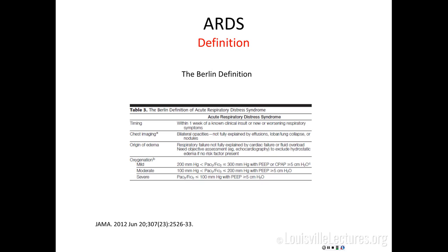This is the new definition. Timing has to be within one week. The chest X-ray must show bilateral opacities. The origin of the edema should not be from the heart. They don't talk about pulmonary artery catheter here because we don't place as many as we used to, but they talk about having some objective assessment — echocardiography, maybe brain natriuretic peptides. And there is grading of severity: mild ARDS is PO2/FiO2 between 200 and 300, moderate is between 100 and 200, and severe is less than 100. They also add PEEP — you must have a PEEP of at least 5 in this new definition.